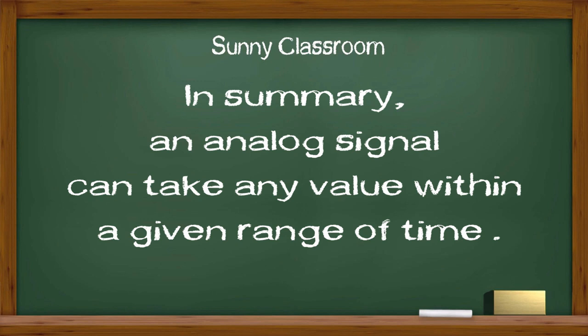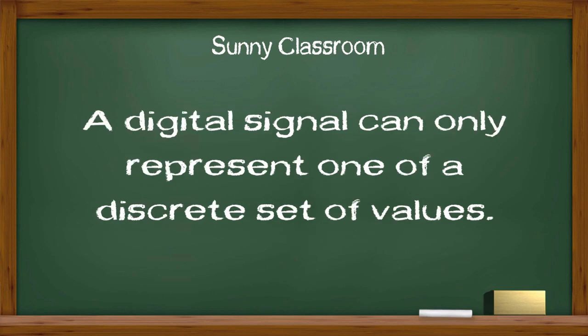In summary, an analog signal can take any value within a given range of time. A digital signal can only represent one of the discrete set of values.